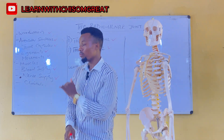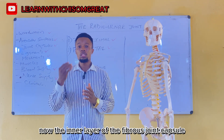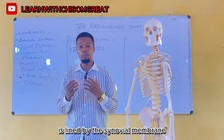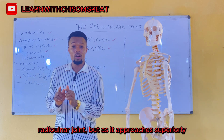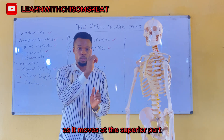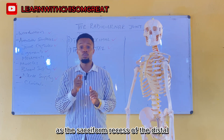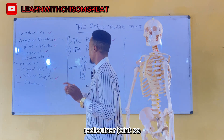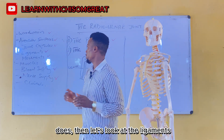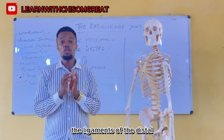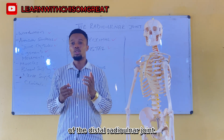The joint capsule of the distal radioulnar joint contains a fibrous joint capsule, and the inner layer is lined by the synovial membrane. As the synovial membrane lines the articular surface and moves superiorly, it stops lining the joint capsule and continues on its own, forming the sacciform recess of the distal radioulnar joint. The synovial membrane also contains synovial fluid. The ligaments of the distal radioulnar joint are the anterior and posterior ligaments.